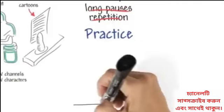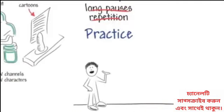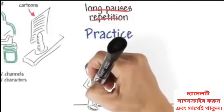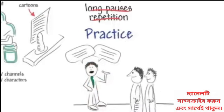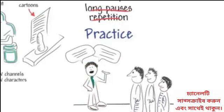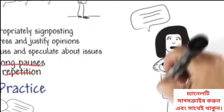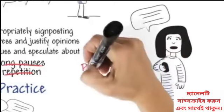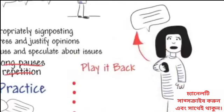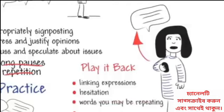Practice is the key to increasing your fluency. Practice using English in everyday communication as much as you can. Record yourself talking about different subjects, then play it back and listen for linking expressions, hesitation, words you may be repeating, and times when your speech is slow. This will help improve your fluency.